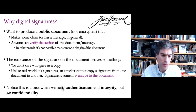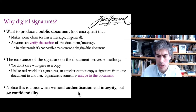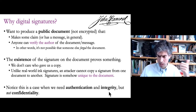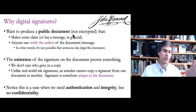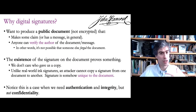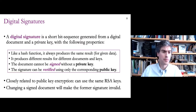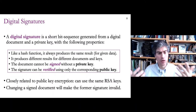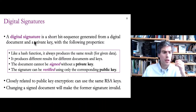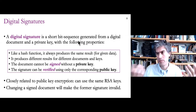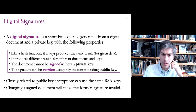With digital signatures, we're trying to get authentication and integrity of messages — knowing that the message came from a particular person and was not changed before delivery — but we don't care about confidentiality. This is really for communicating certain information publicly, like what the public key is for a particular website that everyone in the world should know and trust. In more detail, a digital signature is a short bit sequence — maybe 512 bits — generated from a digital document and a private key. Given the same input document and private key, it will always produce the same output. If the document or key changes, it produces a different output.